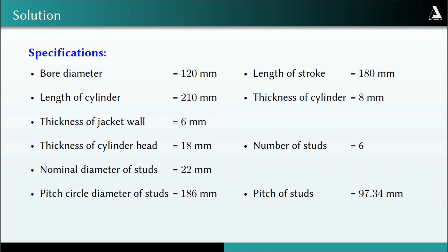To summarize the specifications of the cylinder: bore diameter 120 mm, length of stroke 180 mm, length of cylinder 210 mm, thickness of cylinder 8 mm, thickness of jacket wall 6 mm, thickness of cylinder head 18 mm, number of studs 6, nominal diameter of studs 22 mm, pitch circle diameter of studs 186 mm, pitch of studs 97.34 mm. Thank you.